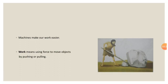Machines are the tools which make our work easier. Work means using force to move objects by pushing or pulling. When we push or pull an object, as a result of pushing or pulling, some work is done. In the picture, a person is moving an object with the help of a simple machine. So through this picture, it is clear that machines help to make our work easier.